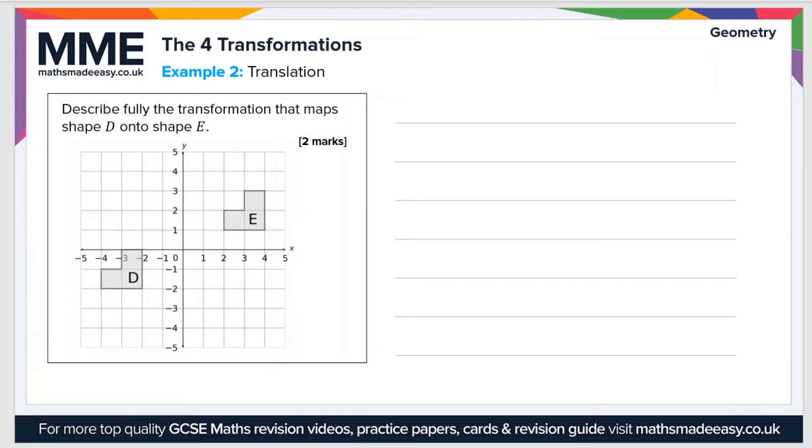So let's take a look at a second example. Describe fully the transformation that maps shape D onto shape E. Well, if we look at shape D and shape E, they're obviously identical shapes. They've not been rotated, so this is clearly a translation. So all we need to do is find the vector that describes this translation.